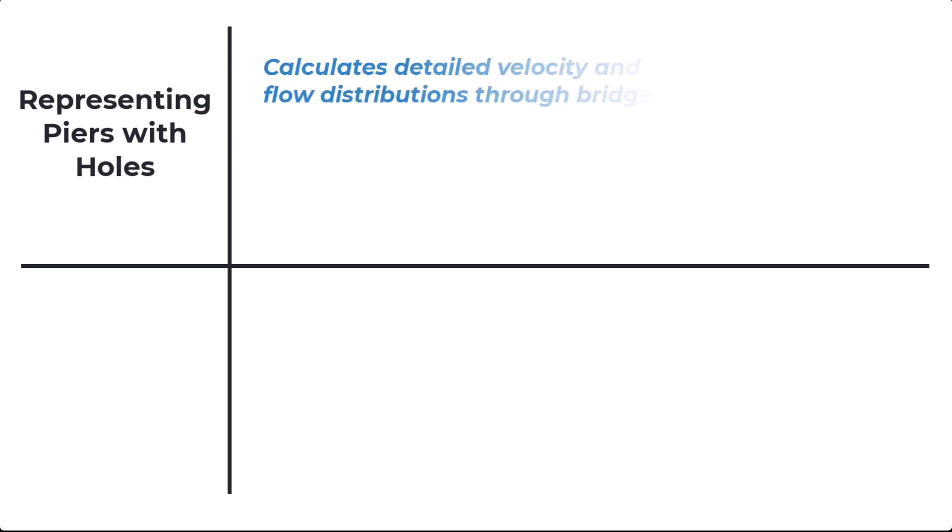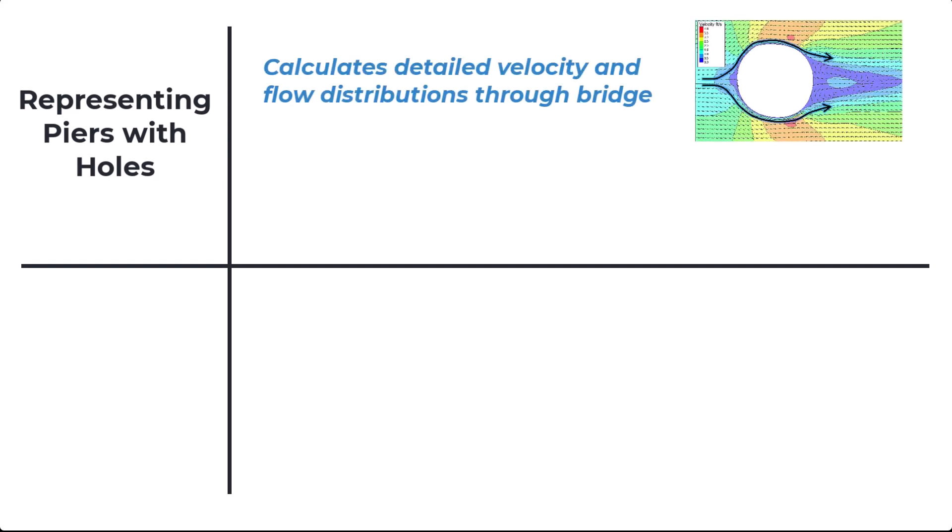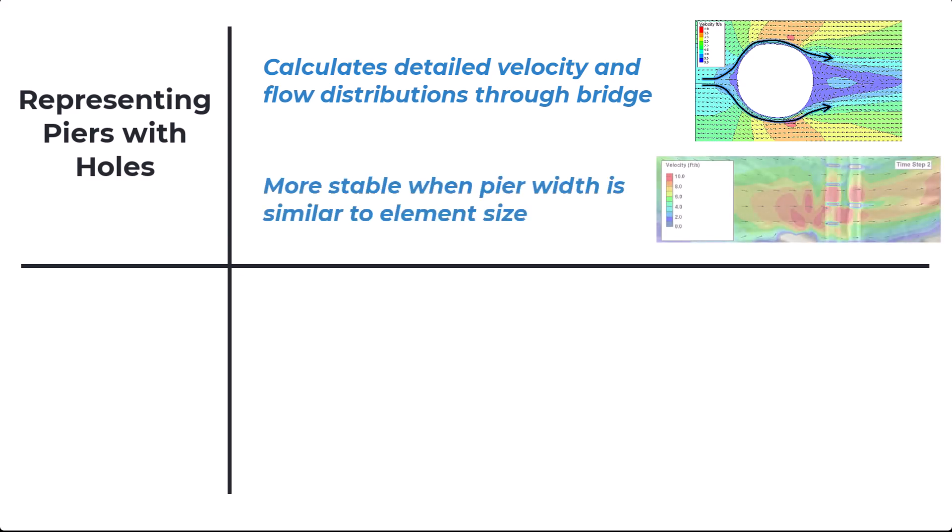For example, representing piers as holes in the mesh is recommended when detailed velocity and flow distribution through the bridge is desired, and when pier width and length is not significantly different than the mesh elements in the bridge area.